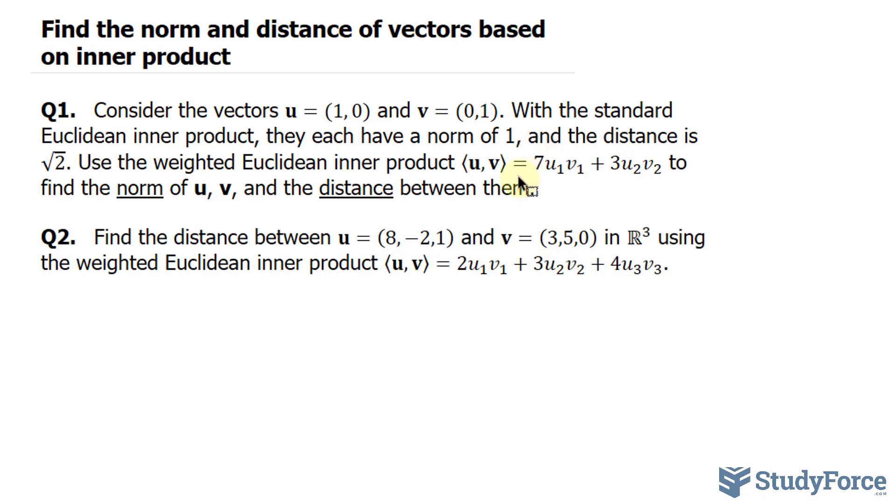The first thing that I'll do is try to find the norm of the vector u. I'll represent it as u with these double absolute bars. And to find this, we use the weighted inner product of u and u. This will be raised to the power of 1 over 2. In other words, we're square rooting the components of u and u after plugging it in to the weighted inner product.